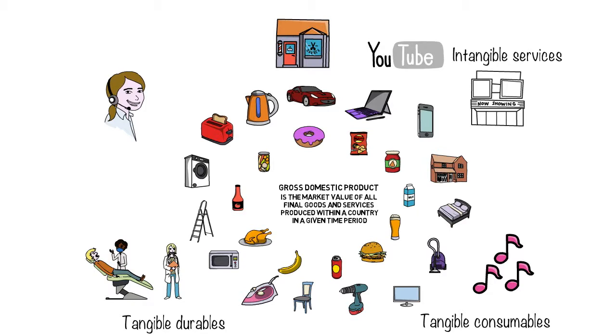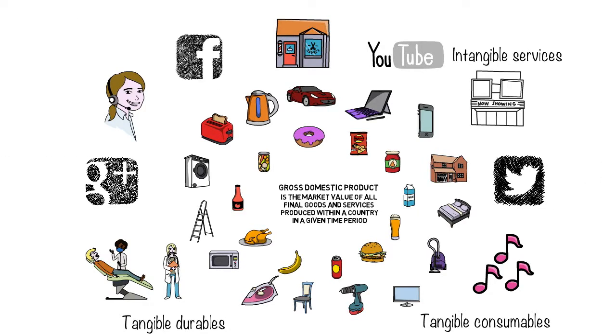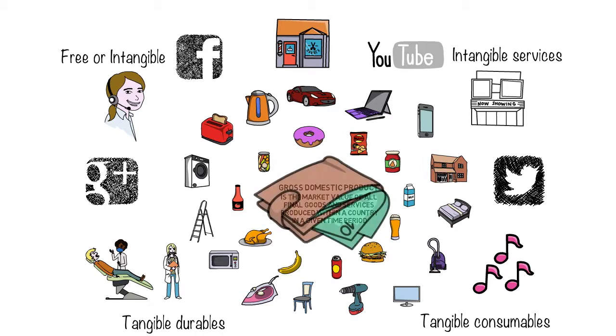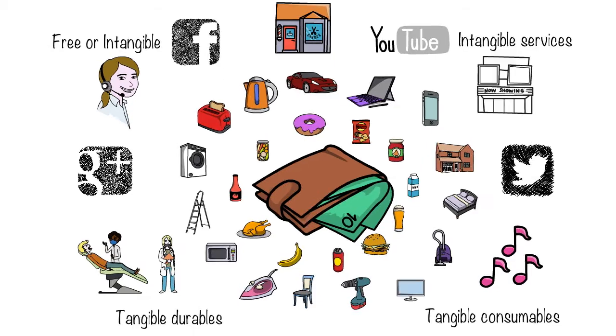And finally, it includes the newer aspect of the economy which is things that we may consider free such as Facebook and Google. They're considered intangible but someone is paying for these, and digital advertisers do indeed pay for these types of services. So overall, what links all these products and services together and how we measure GDP is through money.